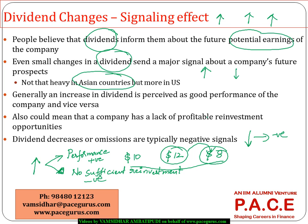Companies must be very careful while managing their dividend policies, because there is significant information asymmetry between managers and shareholders. Shareholders have invested but are not part of day-to-day operations, creating a large information gap. That is why it is better for companies to maintain a stable or steadily growing dividend, rather than making extraordinary changes, since fluctuations can send different and conflicting signals into the market.